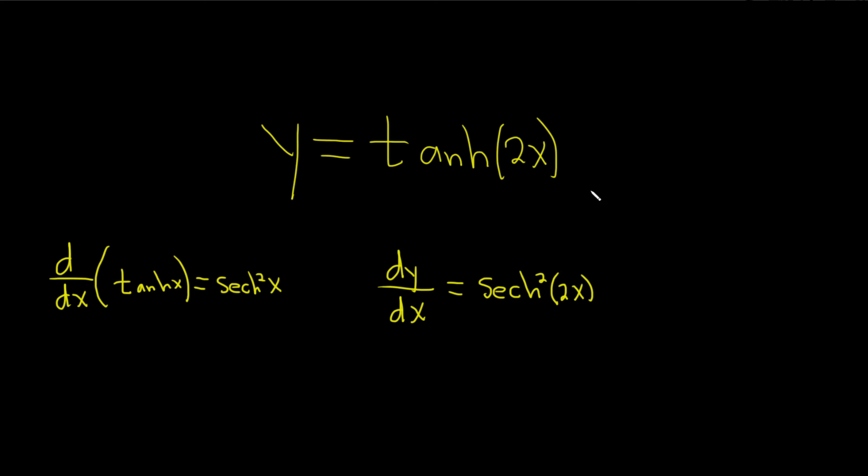And then you multiply by the derivative of the inside, which in this case is just 2. The derivative of 2x is 2. So dy/dx is equal to 2 times the hyperbolic secant squared of 2x.